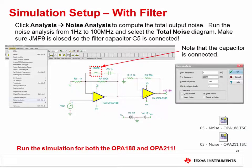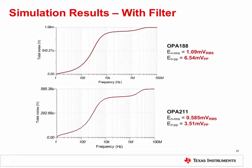Run another SPICE simulation analysis for the total output noise. This time, ensure that the filter capacitor jumper is closed so that the capacitor is connected. As before, select Analysis followed by Noise Analysis, make sure Total Noise is selected, then run the analysis from 1 hertz to 100 megahertz for both the OPA188 and OPA211. With the filter capacitor connected, the OPA188 circuit has a total noise of 1.09 millivolts RMS or 6.54 millivolts peak to peak. The OPA211 circuit has a total noise of 0.585 millivolts RMS or 3.51 millivolts peak to peak.